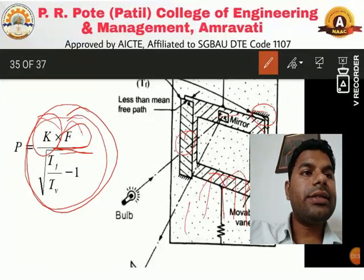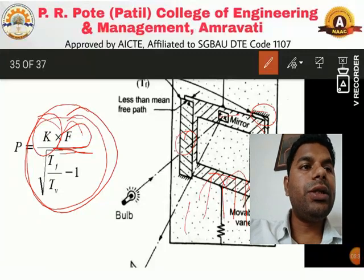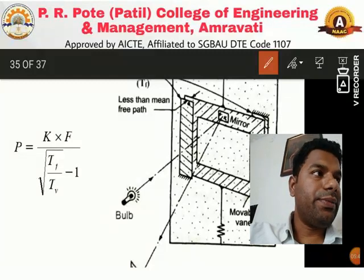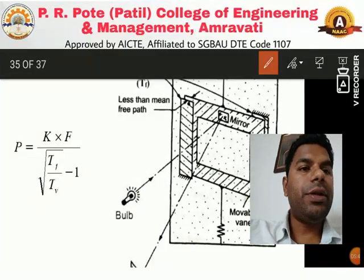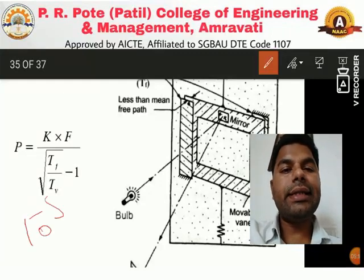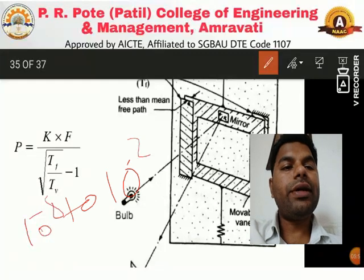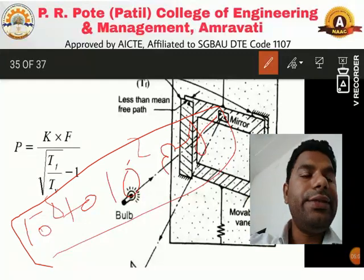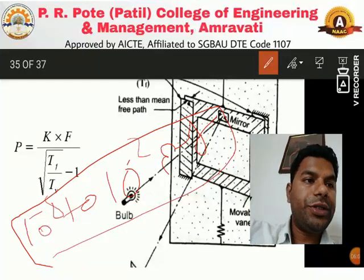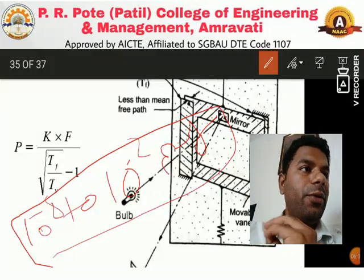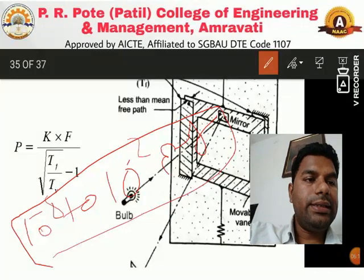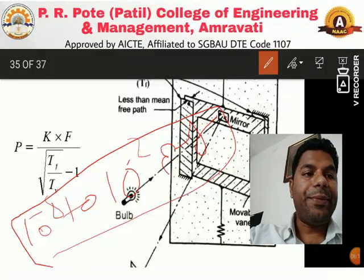The Norsen gauge is used to measure low pressures — that is, vacuum pressures. Its range is 10⁻⁸ to 10⁻² mmHg. For this range, the Norsen gauge is used very effectively for low pressure measurement. Now let's move forward with the new topic: high pressure measurement.